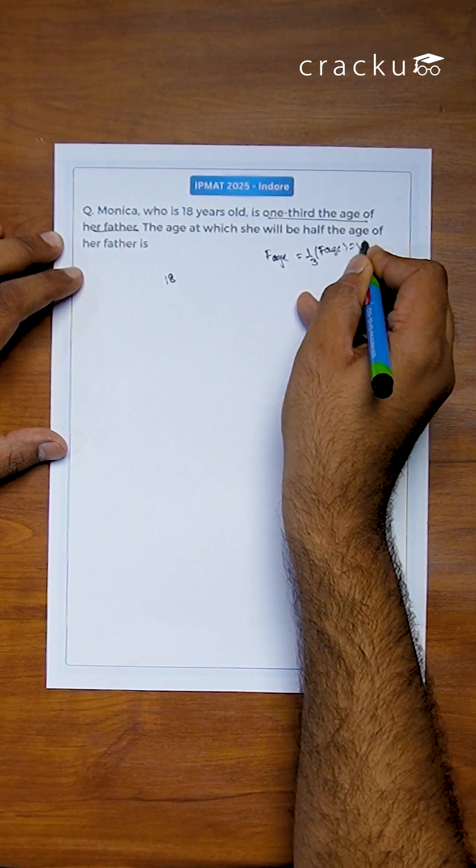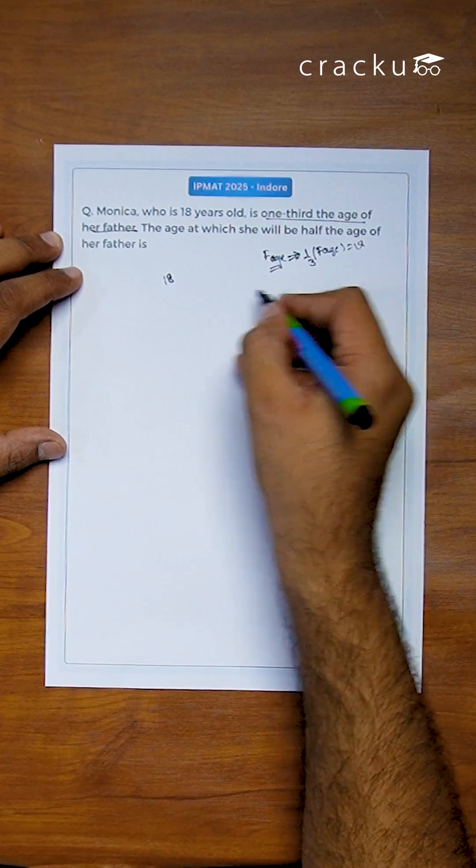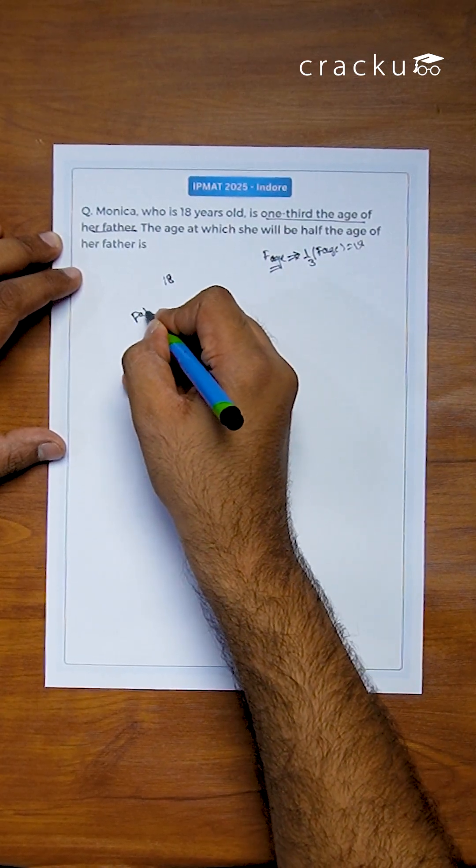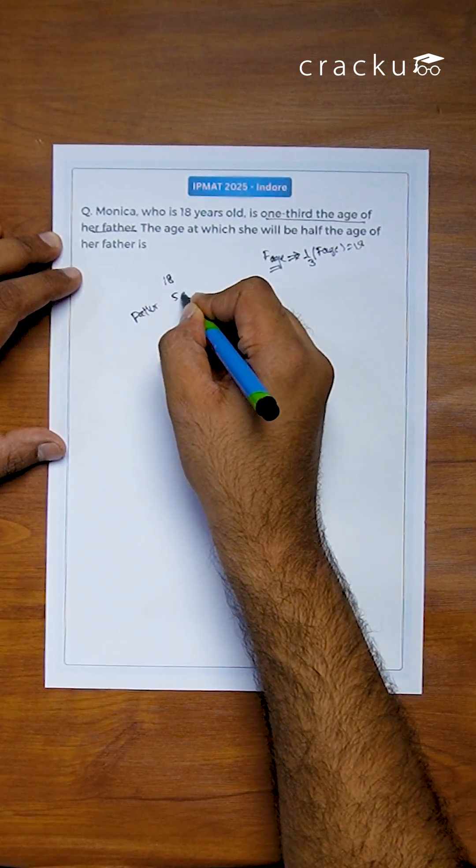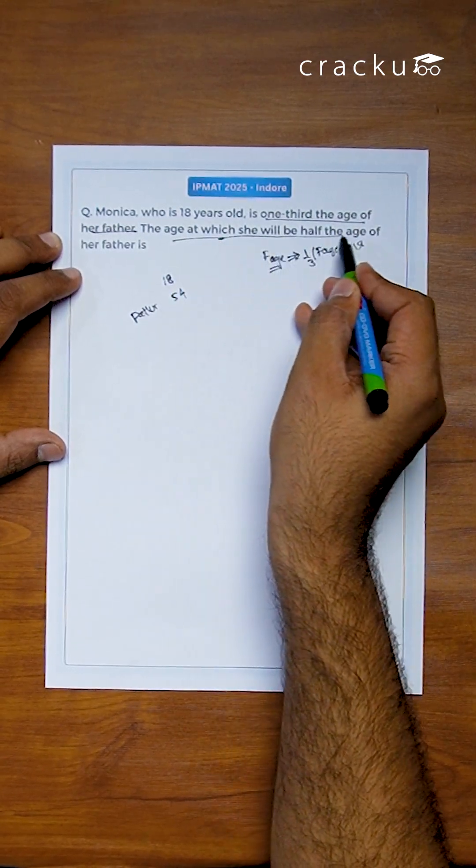This implies father's age is 18 into 3, which is nothing but 54. Similarly, it is also said that the age at which she will be half the age of her father is how much?